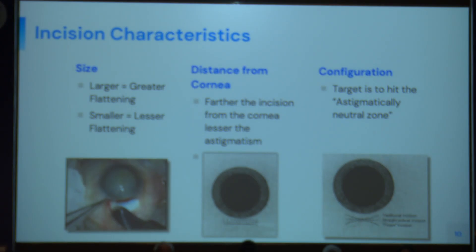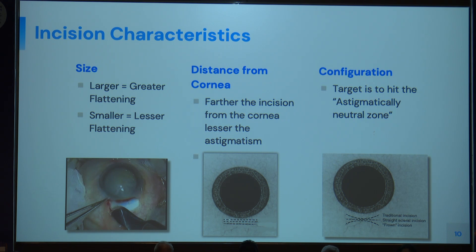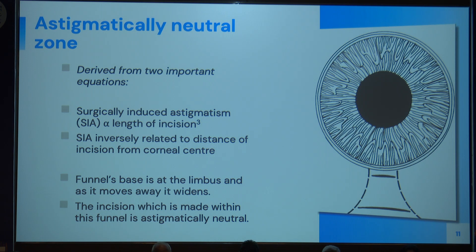To correct astigmatism with SICS, incision characteristics are very important. The larger the incision, the greater the flattening; the smaller the incision, the lesser the flattening. We should always operate on the steeper axis, which we determine from keratometry findings. The farther the incision from the cornea, the lesser the astigmatism, and the closer to the cornea, the more the astigmatism. Cox proposed the astigmatically neutral zone, stating that surgically induced astigmatism is directly proportional to the cube of the incision length and inversely related to the distance of the incision.